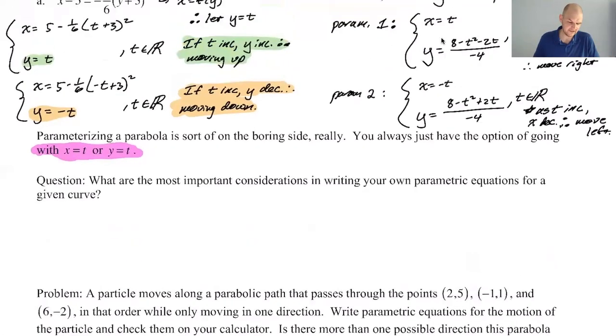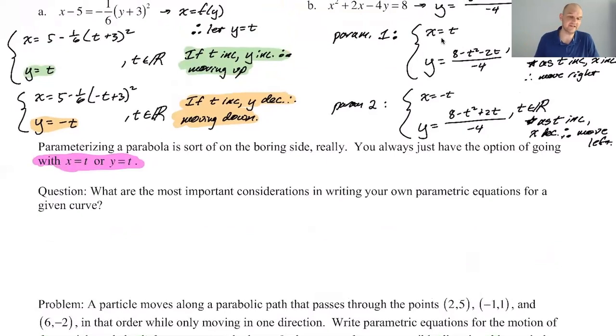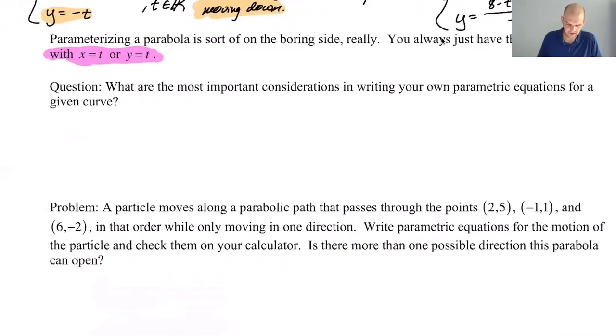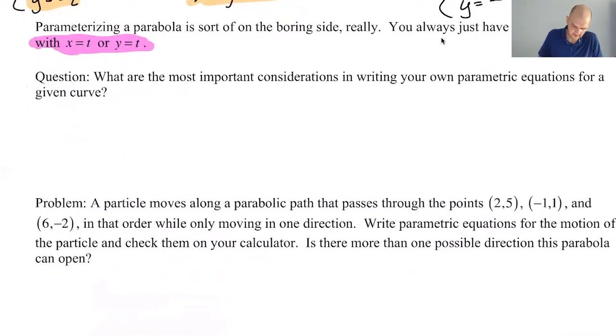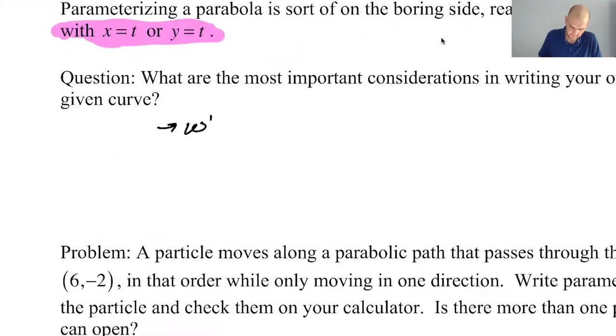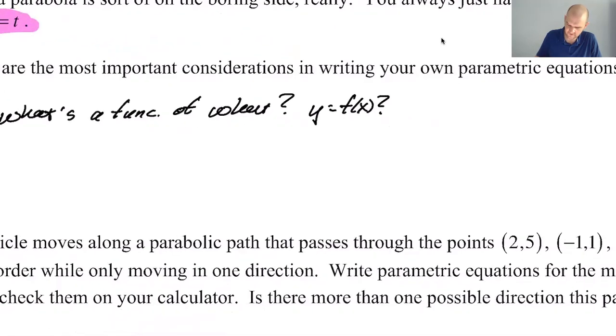But we've seen you can let x equal t, you can let y equal t, you can let x equal negative t, y equal negative t, whatever. And it just depends on what is a function of what. If y is a function of x, x equals t is a great choice. If x is a function of y, then y equals t is a really good choice. So the considerations you should make, I think, are what direction you're going in. Well, let's say what's a function of what?